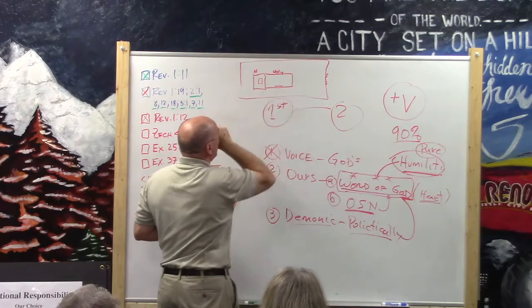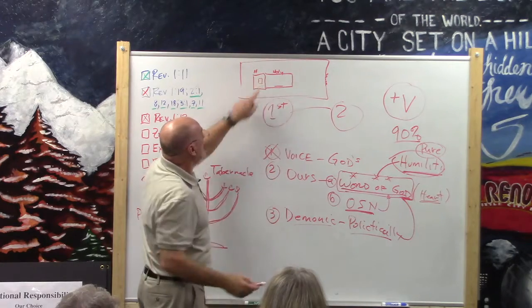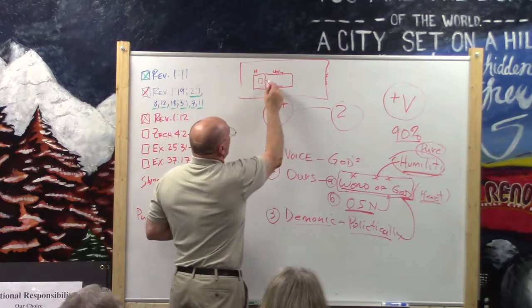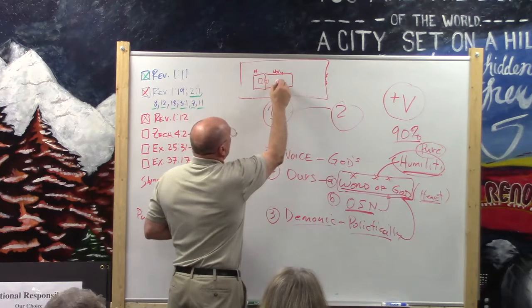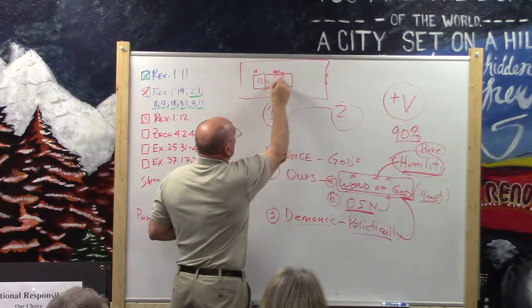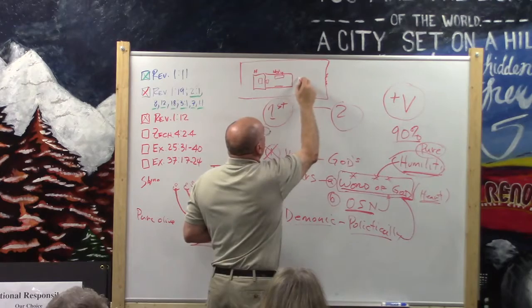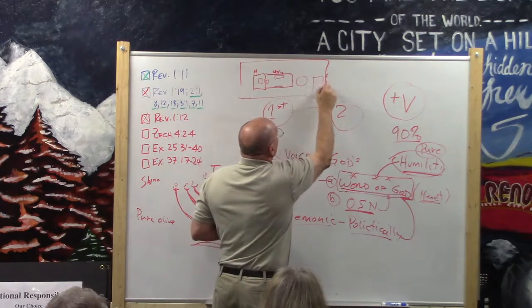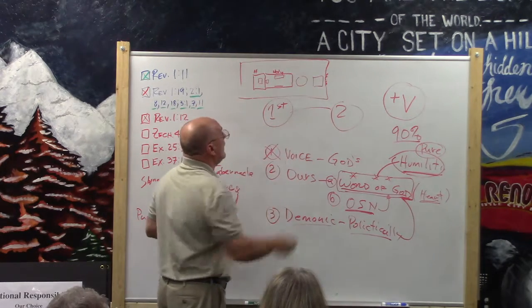And if you remember what happens here, we'll put all the other stuff here. This is the Ark of the Covenant, right? This is the altar of incense. This is the table of the showbread. This is the laver. This is the altar. This is the cross.